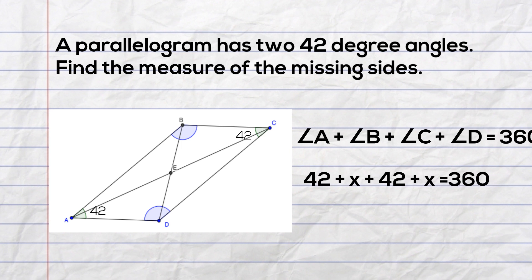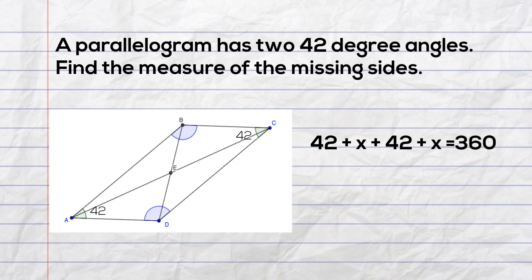So I will write 42 plus x plus 42 plus x equals 360 degrees. Again I will combine like terms, so 42 plus 42 is 84, and x plus x is 2x. I will get the variables to the left and numbers to the right of the equal sign.